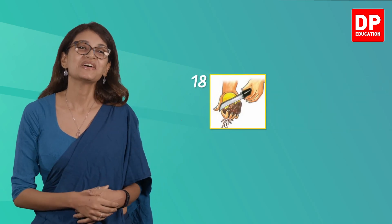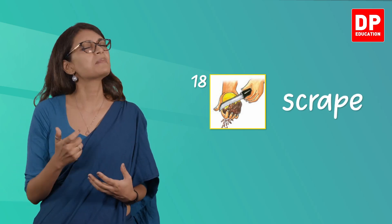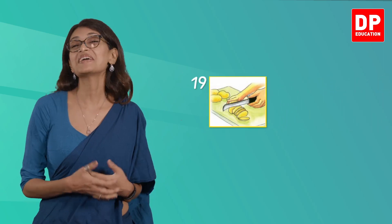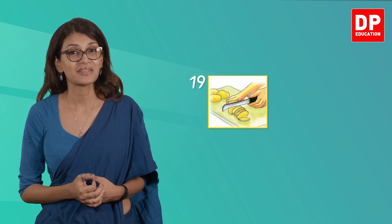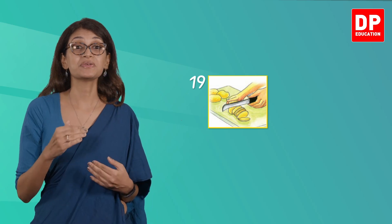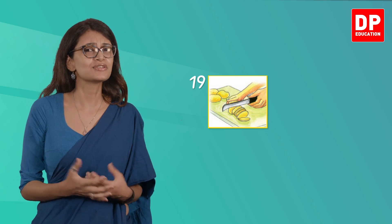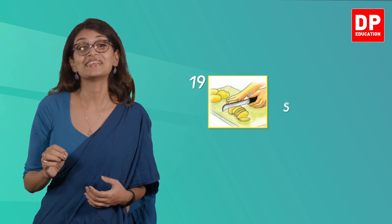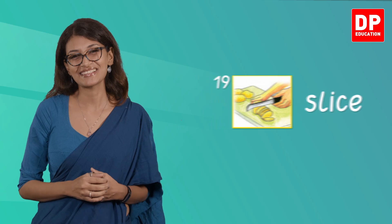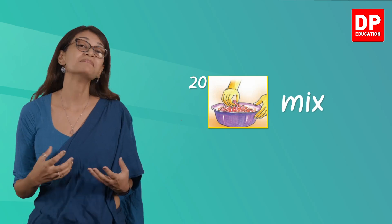Picture eighteen shows the action 'scrape' — we use a knife to scrape off matter. Picture nineteen shows someone cutting up a potato that is being sliced; you usually cut bread into slices too, that's why we refer to it as a slice of bread. Picture twenty — the verb you can use to describe this action is 'mix,' which we have already used before but can use for this as well.